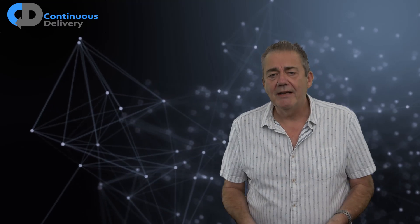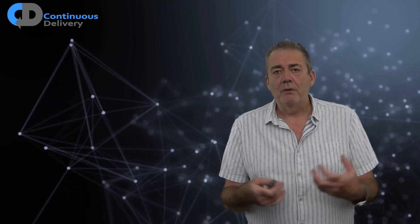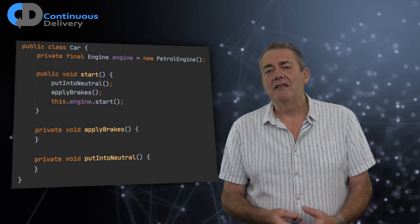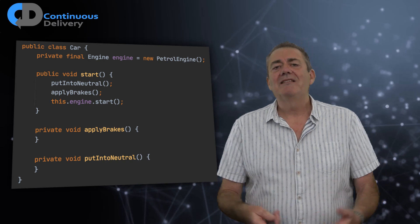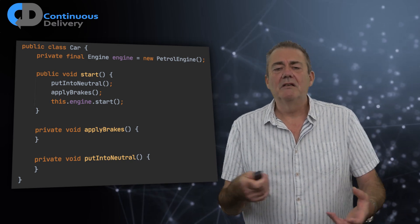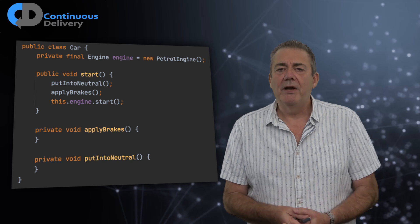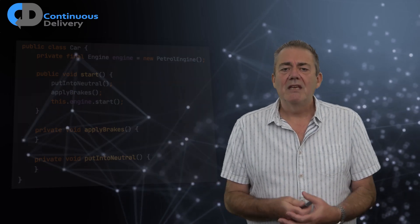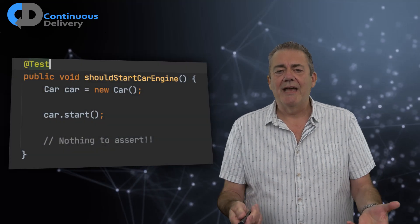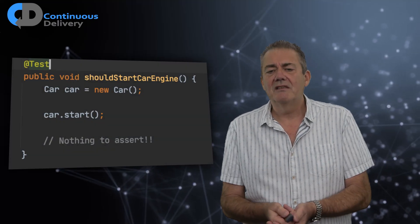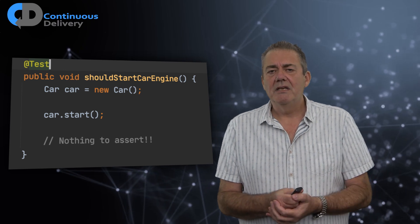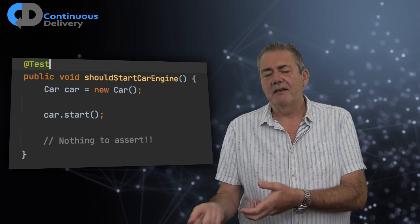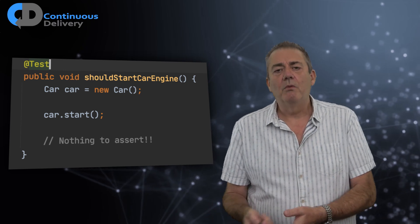Here's a really simple example. Let's imagine for a moment that we have a car. Here's a simple class, a car, and this car has an engine, a petrol engine inside. We've got a start method on our car, which is going to put the car into neutral. It's going to apply the brakes to make sure that we don't roll away. And then it's going to call start on the engine. Let's imagine that we wanted to try and write a test for that. We could create our car. We could tell the car to start. And how do we tell whether the engine started? Well, we can't. We can't do that because we don't really have access to the engine. The engine's just a component of the car hidden away somewhere.